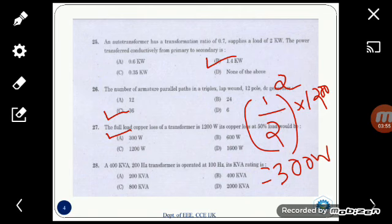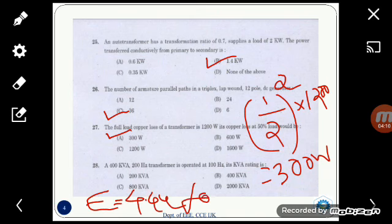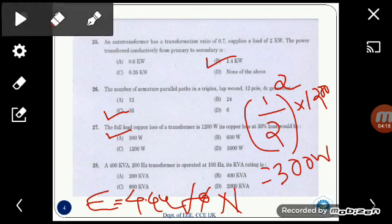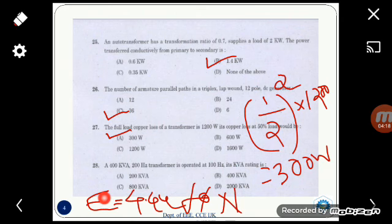The 28th question is: a 400 KVA, 200 hertz transformer is operated at 100 hertz. Its KVA rating is? We know that the KVA rating is directly proportional to the frequency, based on the equation that is the voltage is equal to 4.44 f Φ N. If the flux and the number of turns are fixed, the voltage here is directly proportional to the frequency, and hence it is directly proportional to the KVA. So here the KVA is reduced by 2, because the frequency is reduced by 2. So here the answer is 200 KVA, that is option A.